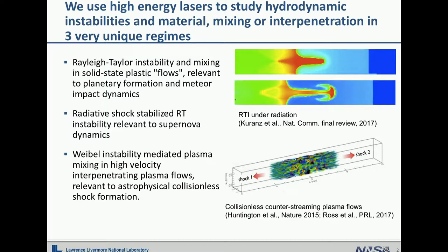This is the 2D simulation of such a case. The top is Rayleigh-Taylor instability under a very high radiation environment versus the classical Rayleigh-Taylor environment. You can see the Rayleigh-Taylor is very much suppressed under high radiation environment, so we try to verify whether this is the case experimentally. The third case is plasma interpenetrating — the Weibel instability-mediated plasma mixing in high velocity interpenetrating plasma flows, which is relevant to astrophysical collision shock formation. This is the 3D simulation of the magnetic field map when two plasma flows go toward each other, creating this Weibel instability as well as magnetic field.